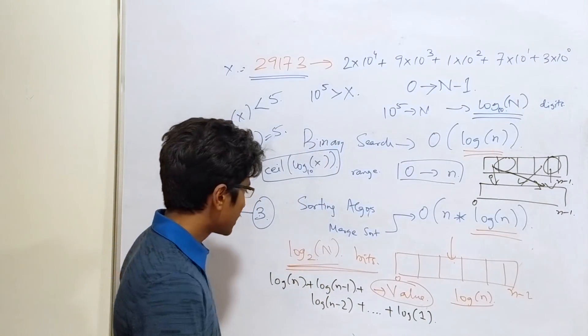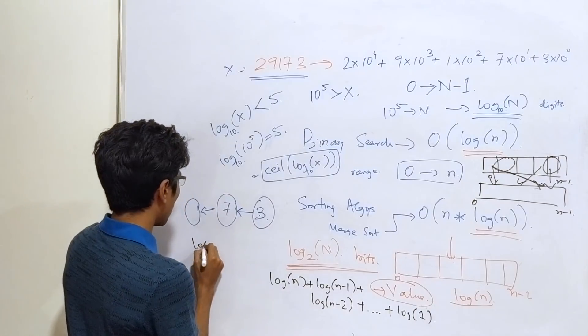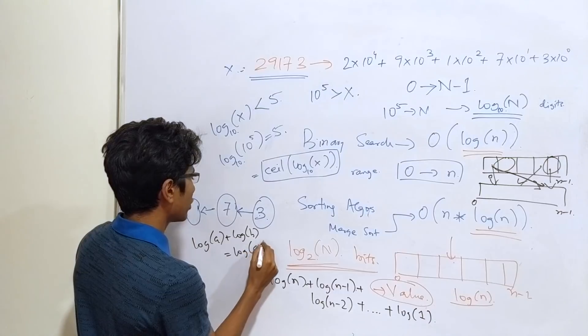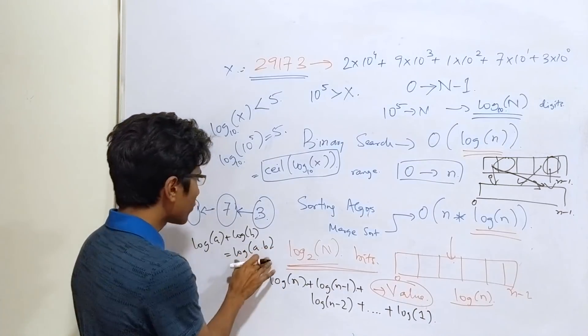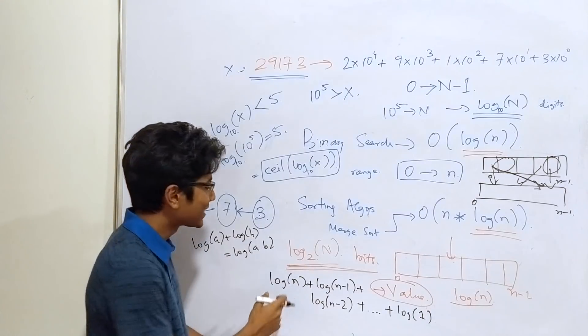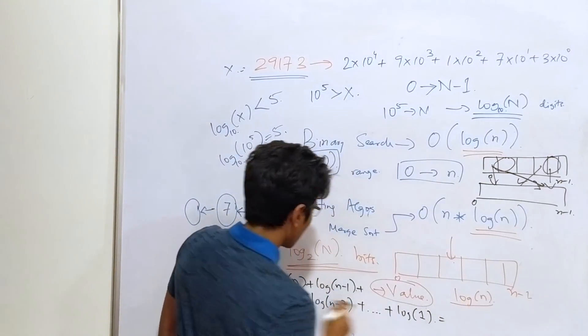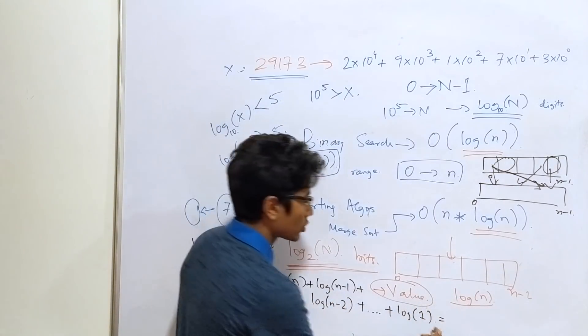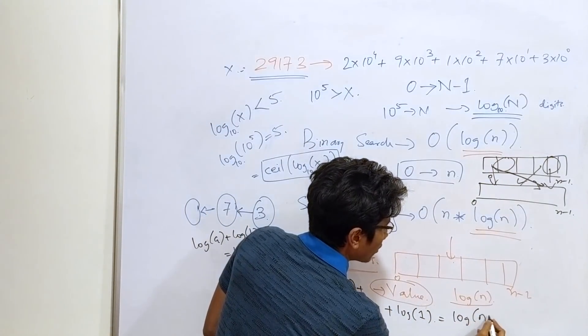But, the important thing here is that there is a property log of a plus log of b is equal to log of a into b. Even if you don't know this, what I can tell you is that it exists. And, this whole term then comes out to be log of n into n-1 into n-2, so on and so forth. So that is log of n factorial.